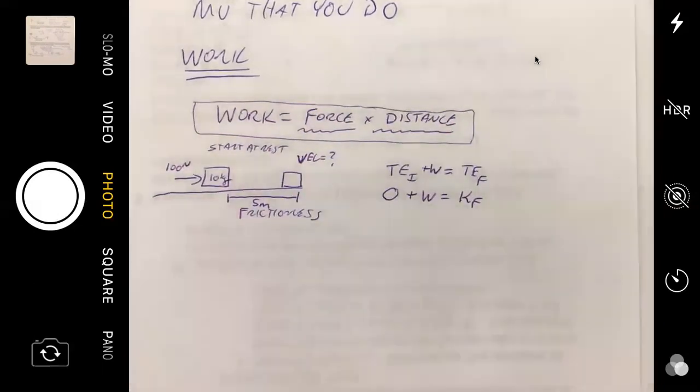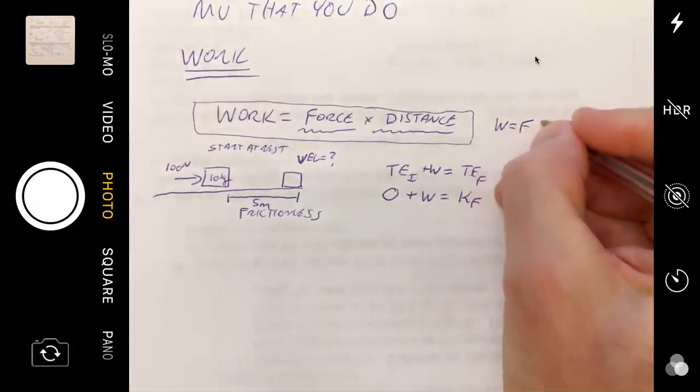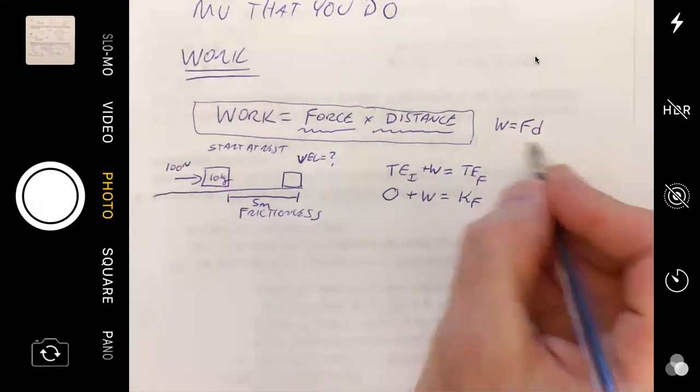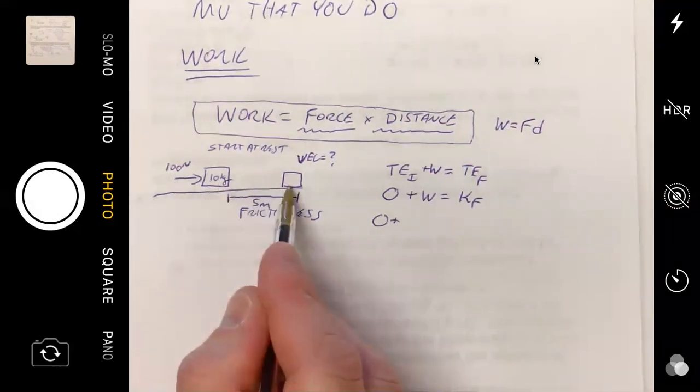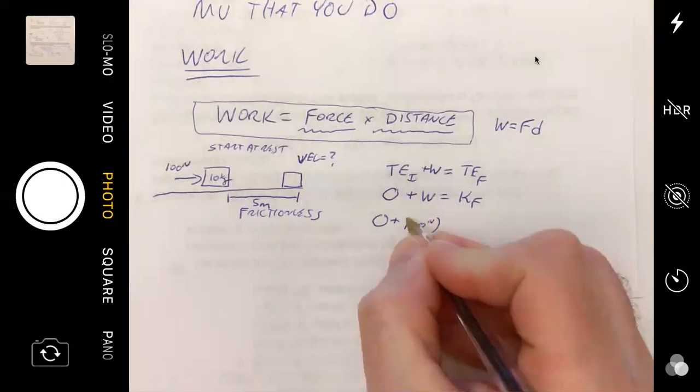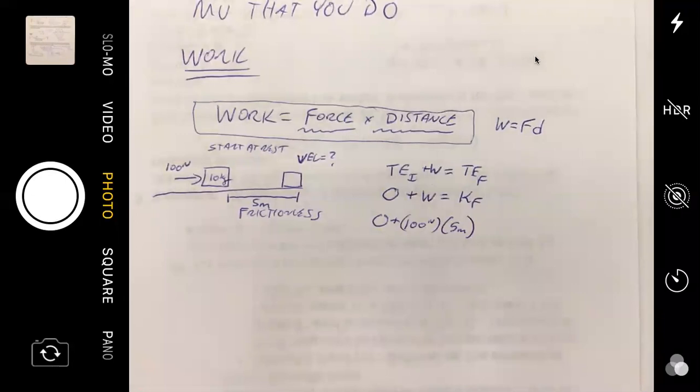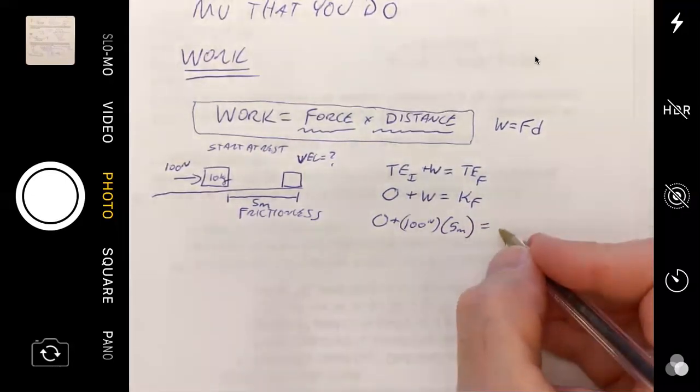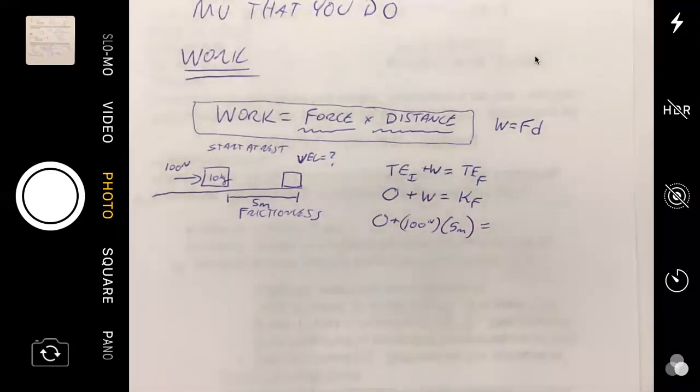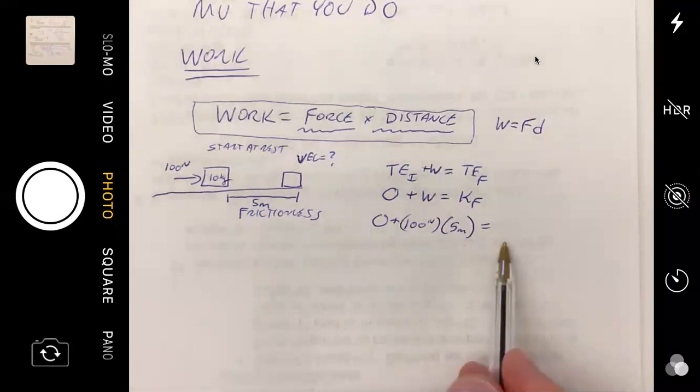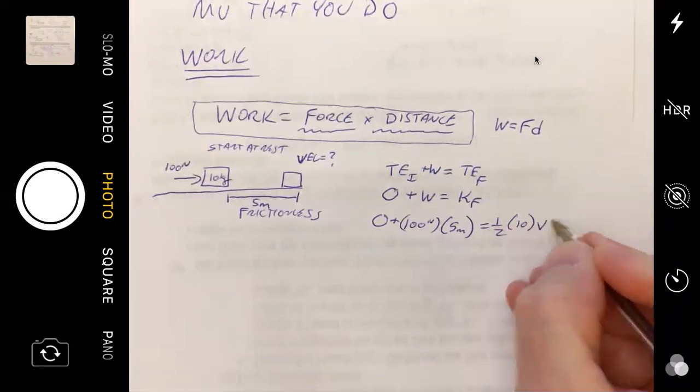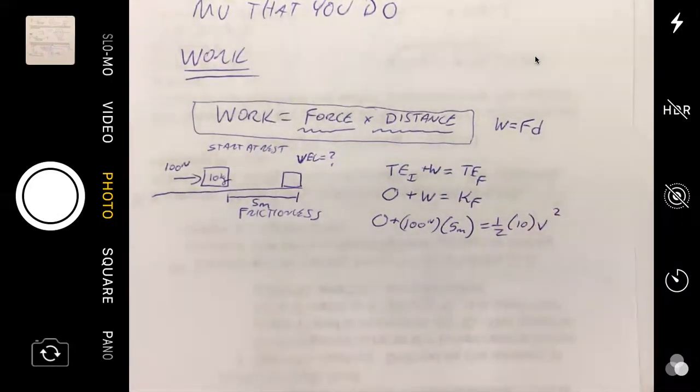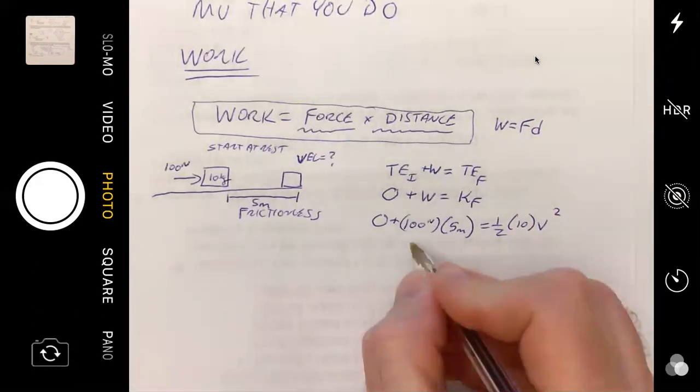And I think we can see that there's definitely going to be some work being done here, and then because it's going to be still on the ground, now it's moving, we're going to say that it has some kinetic energy at the end. So this is key here. We just introduced the idea that work is equal to force times distance, so we can write that as W equals FD. And so if I know what W is, and I come down here and I say, well look, the force that's causing this thing to move is 100 newtons, and it's acting over a distance of five meters.